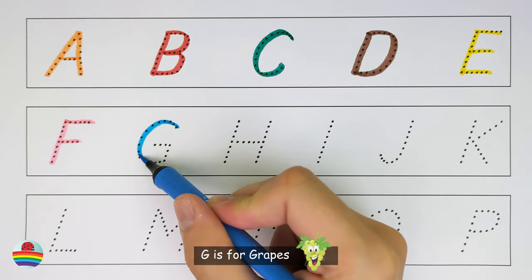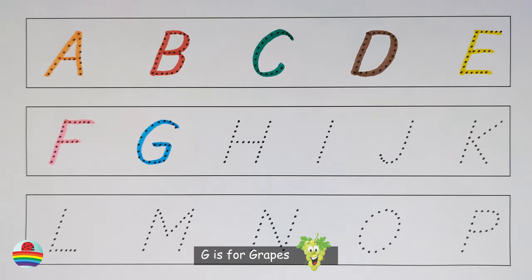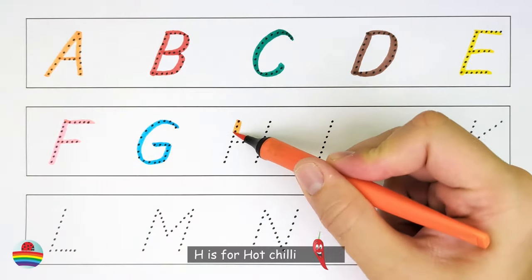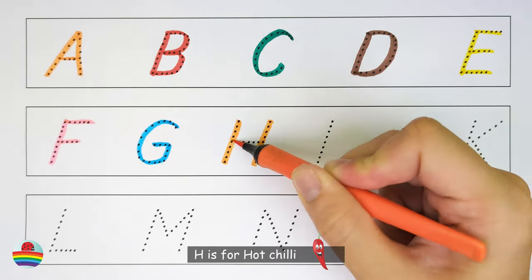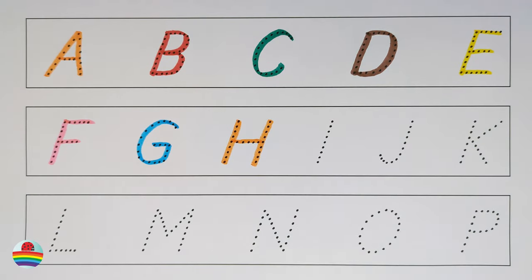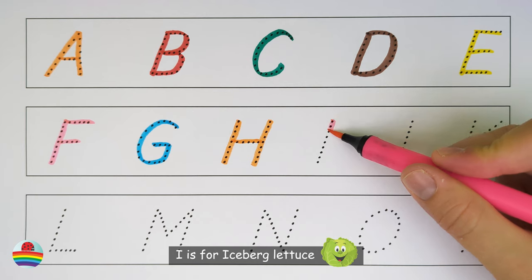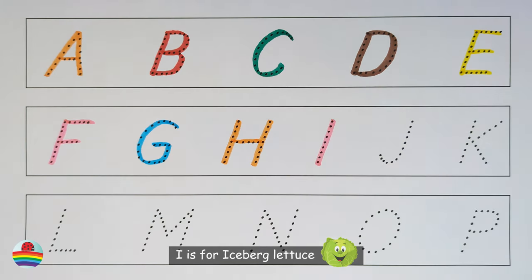G. G is for grapes. H. H is for hot chili. I. I is for iceberg lettuce.